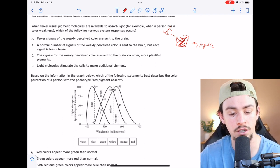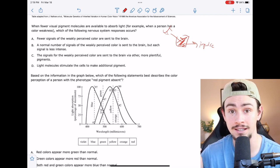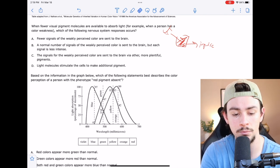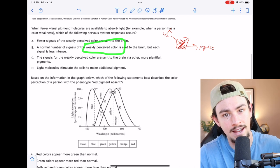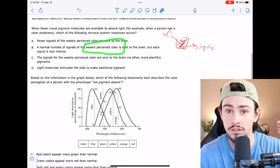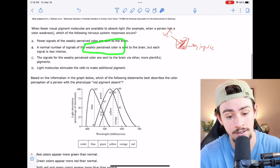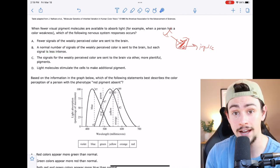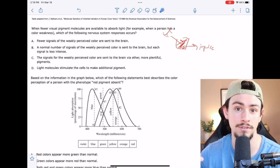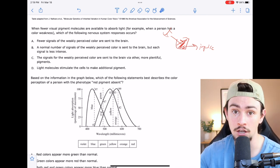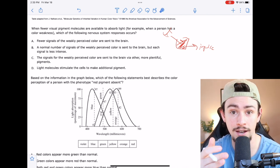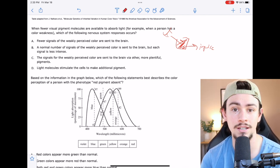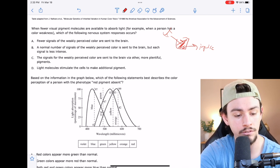B says a normal number of signals of the weakly perceived color is sent to the brain, but each signal is less intense. This is wrong for a couple of reasons. One is that it's assuming the weakly perceived color is a function of the actual incoming light, and that's not true - it's a function of the pigment absorbing cells in the retina. But the second reason is it's saying each signal is going to be less intense. And remember, these are action potentials. A huge characteristic of action potentials is that they are all or nothing. So how do action potentials encode strength? They do that with frequency, not intensity. So B is incorrect for multiple reasons.